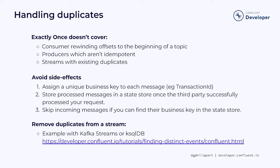If you want to avoid unwanted side effects, you can do the following. First, assign a unique business key to each message — for example, a transaction ID. Then create a state store in which you will store the processed messages from the input topic. And finally, skip incoming messages if you can find that their business key is in the state store. Be careful about how much data will be stored in the state store — you might want to clean it on a regular basis if you know you won't see any more duplicates for a particular business key. An out-of-the-box solution is to use one of the Kafka Streams or ksqlDB recipes available on developer.confluent.io to filter out duplicates from a stream.